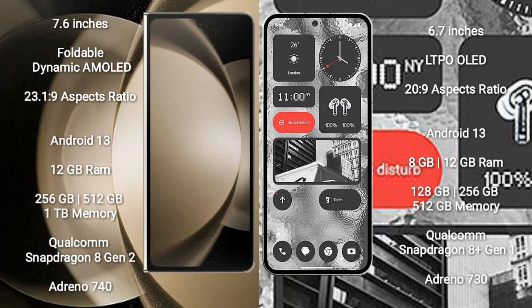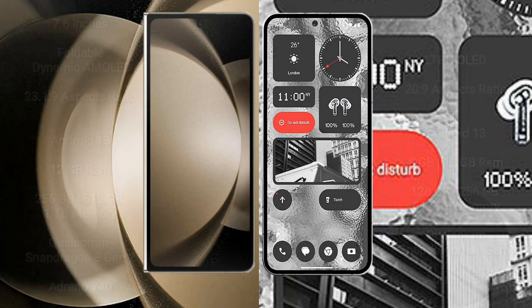Nothing Phone 2 comes with 8GB or 12GB RAM and 128GB, 256GB, or 512GB internal storage. It features a Qualcomm Snapdragon 8 Gen 1 processor and GPU Antioh 730.